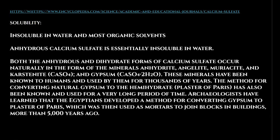Now we are really getting to some even more extremely relevant properties of this far-from-trivial salt layer. Both the anhydrous and dihydrate forms of calcium sulfate occur naturally in the form of the minerals anhydrite, angelite, mariacite, karstenite, and gypsum. These minerals have been known to humans and used by them for thousands of years. The method for converting natural gypsum to the hemihydrate — plaster of Paris — has also been known and used for a very long period of time. Archaeologists have learned that the Egyptians developed a method for converting gypsum to plaster of Paris, which was then used as mortar to join blocks in buildings more than 5,000 years ago.